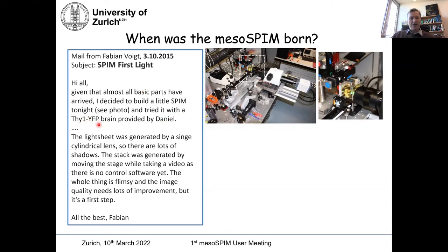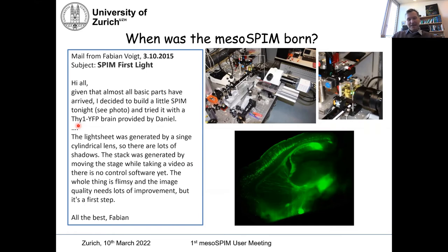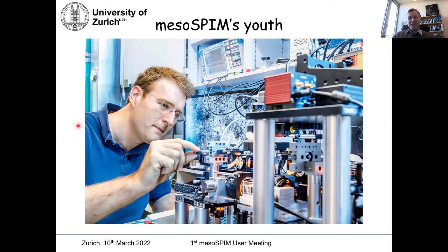He said he tried it with a Psi 1 YFP brain provided by Daniel Kirschenbaum from Adrian Aguzzi's lab. And this is actually the stack he sent with this — a whole stack of a mouse brain already. He wrote, 'The light sheet was generated by a single cylindrical lens, so there are lots of shadows. The stack was generated by moving the stage while taking a video, as there is no control software yet. The whole thing is flimsy, and the image quality needs lots of improvement. But it's the first step.' I consider this the start of the Mesospim. For several years, obviously, there were still improvements necessary, and Fabian worked hard to get version 1, version 2, up to version 5 of the Mesospim to really have an instrument useful for others and that can be disseminated to a larger community.